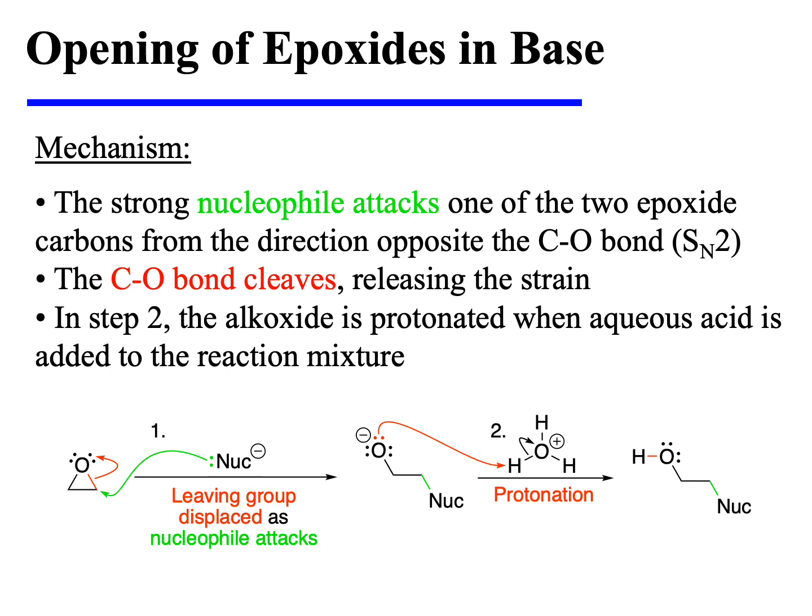The reaction utilizes a strong nucleophile. Strong nucleophiles are often basic, and that's the reason why this reaction is called epoxide opening in base. A strong nucleophile will attack one of the two epoxide carbons from the direction opposite the cleaving C-O bond. This is an SN2-like process. The C-O bond cleaves, alleviating the ring strain inherent in an epoxide. This explains why the alkoxide — the O⁻, the oxyanion — is a leaving group here. Normally, we do not consider an alkoxide to be a good leaving group; however, in this case, the leaving group ability is offset by the release of a great deal of ring strain.